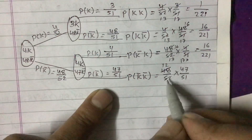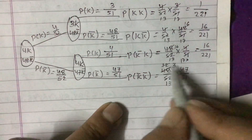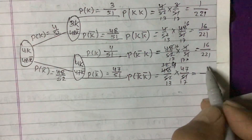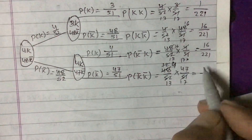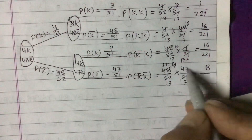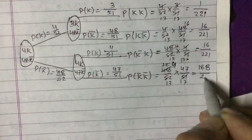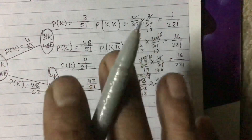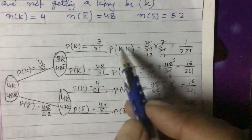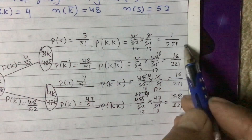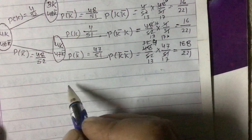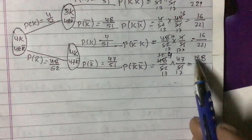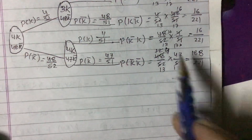For P(K-complementK-complement) = 48/52 × 47/51. Simplifying by cancelling common factors — 4 divides into 52 giving 13, and 3 divides into 51 giving 17 — we get 188/221. So the probabilities are: P(both king) = 1/221, P(both not king) = 188/221, and we can state these conclusions from the tree diagram.